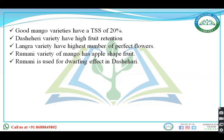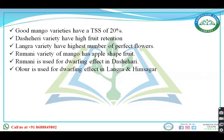Langra variety has the highest number of perfect flowers — that is bisexual flowers — and the Romani variety has the lowest. Romani variety has apple-shaped fruits and is used for the dwarfing effect in Daseri, meaning the rootstock of Romani is used as a dwarfing rootstock for Daseri.